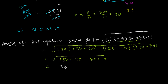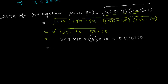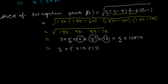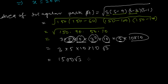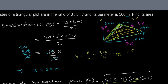Breaking it down: 150 = 3 × 5 × 10, 90 = 3² × 10, 50 = 5 × 10, and 10 = 10. From the pairs: 3² gives one 3 outside, two 5s give one 5 outside, and the four 10s give two 10s outside. Inside we're left with √3. So the area = 3 × 5 × 10 × 10 × √3 = 1500√3 square meters. The area of the triangular plot is 1500√3 m².